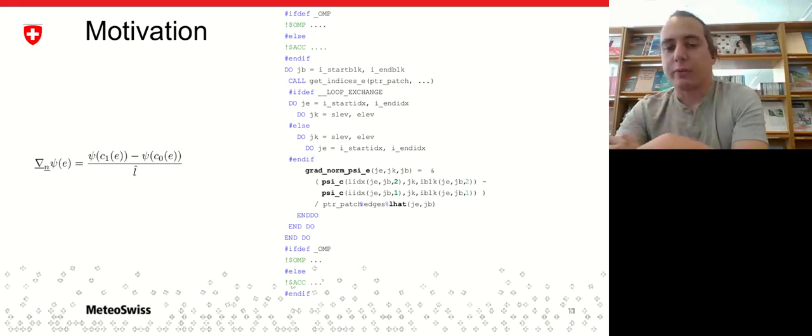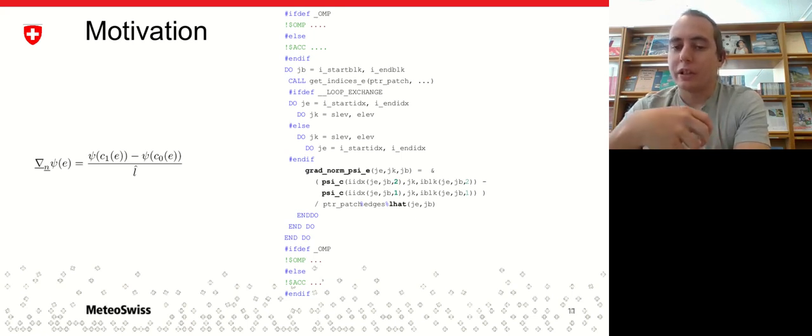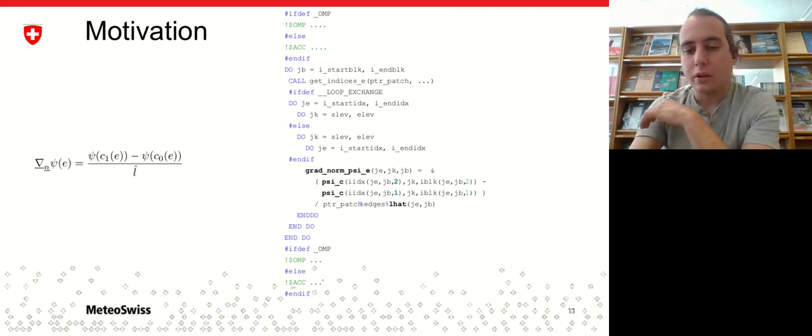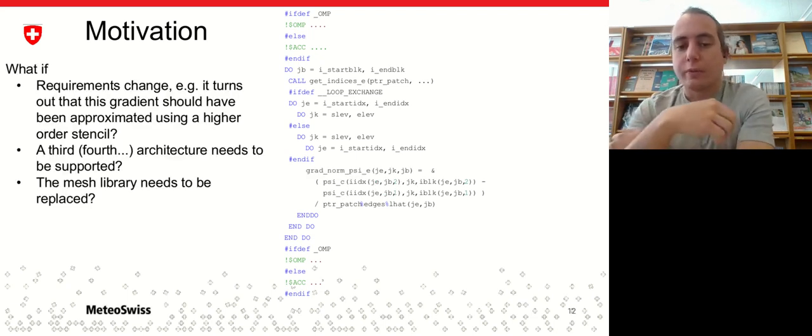So where does this leave us? On the right hand side, we have quite a verbose code listing. And on the left hand side, we see the equation that we originally wanted to implement. Basically, what we have written is a lot of performance code and just maybe five percent of the code that we wrote is the actual science.